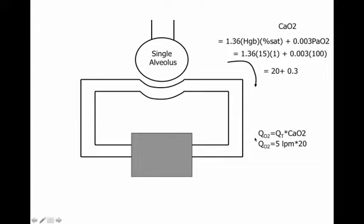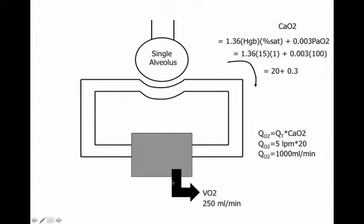Oxygen delivery, sometimes called QO2 or DO2, is cardiac output times arterial content. With normal numbers—cardiac output of 5 liters per minute and content of 20—changing units gives us about 1,000 mL per minute of oxygen delivered normally. The body (our big black box) consumes some oxygen and produces some CO2. Normal oxygen consumption in someone not very active is about 250 mL per minute.